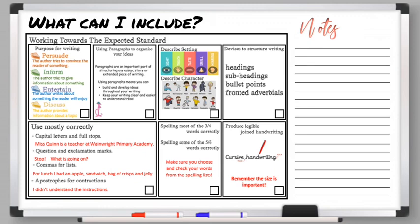Devices to structure writing — subheadings, headings, bullet points, and fronted adverbials — can all be used in this text. Punctuation, particularly commas for lists, can definitely be used. In your introductory paragraph you could list the types of people the instructions might be good for. Remember three-four-five-six vocabulary words — you can Google those, or find them in your writing packs at school. Also focus on joined handwriting.